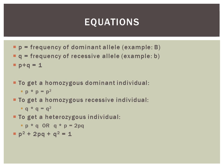That's a pretty easy equation, the first one. The second equation is P squared plus 2PQ plus Q squared equals 1. That represents the frequency of the three different genotypes for one trait in a population: homozygous dominant, homozygous recessive, and heterozygous. To figure out the frequency of homozygous dominant individuals, that's represented by P squared, because you need to get one dominant allele and then another — P times P gives you P squared.